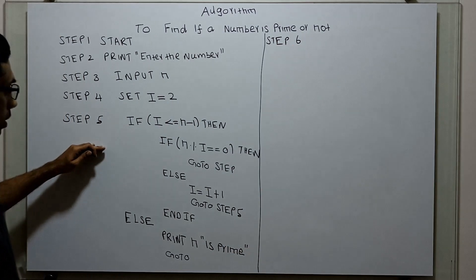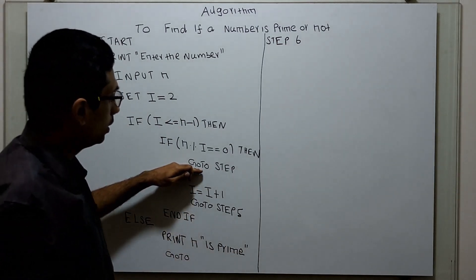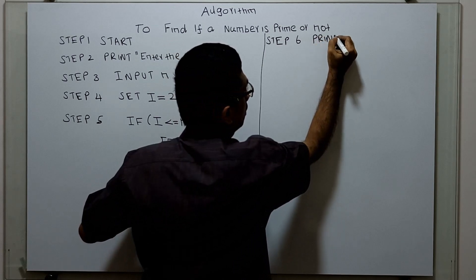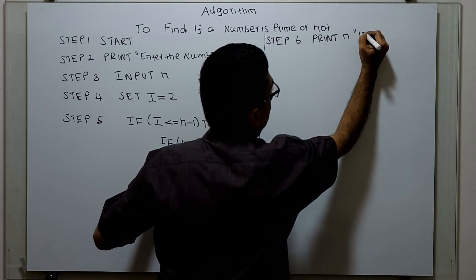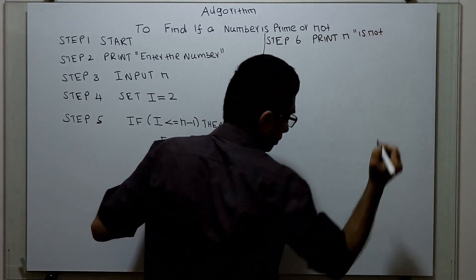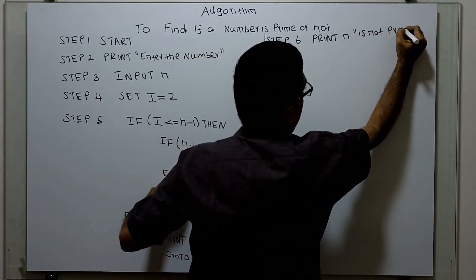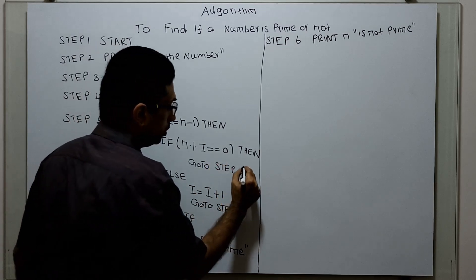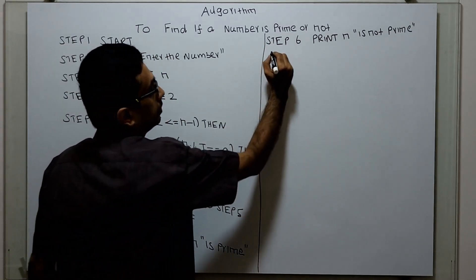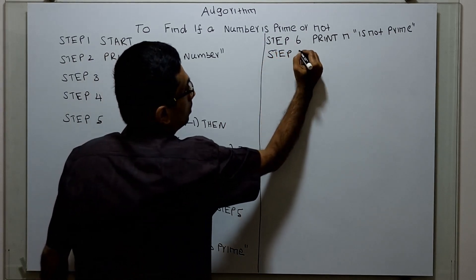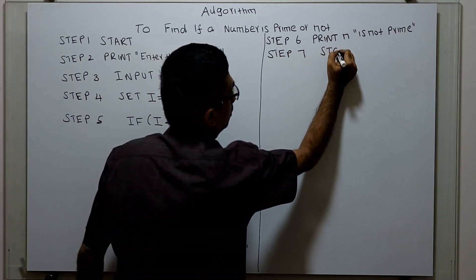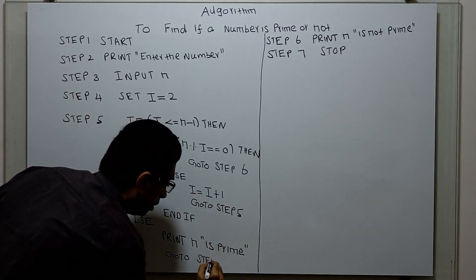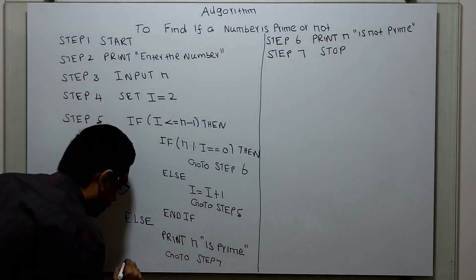Step 6, I am printing: n is not prime. When n modulo i equals 0, I move the control to step 6 and print n is not prime. Step 7 is the logical stop of the algorithm.